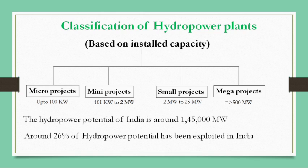In India, the hydropower potential is around 1,45,000 megawatt, and presently approximately 26% of this hydropower potential has been exploited. This presents a very good opportunity for harnessing the hydropower potential of India in the near future.